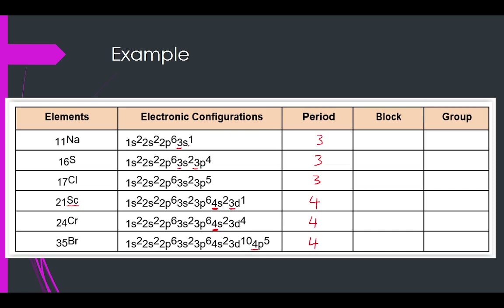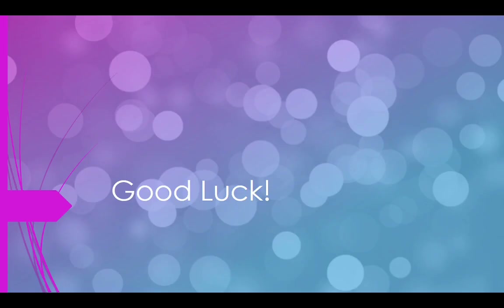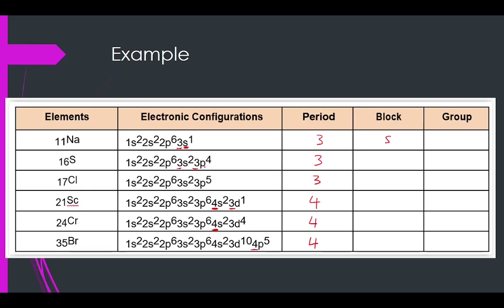For block: if the electronic configuration ends in S, write S block. If it ends in P, it is P block. If it ends in D, it is D block. So configurations ending in D are D block, and those ending in P are P block.